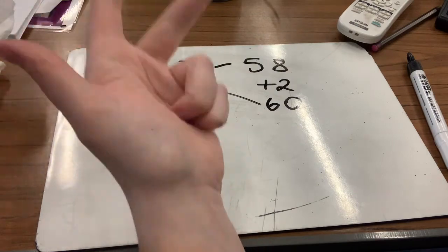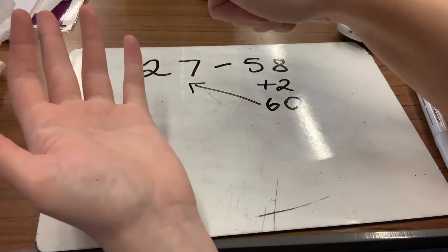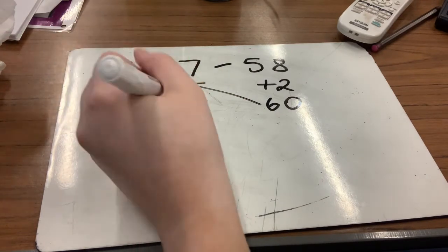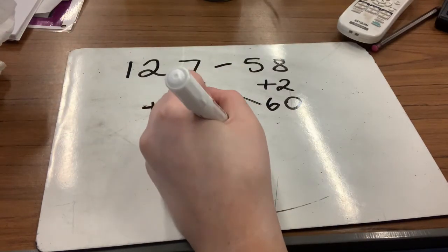70, 80, 90, 100, 110, 120. So that would be six tens and seven units, or 67. So I put my 67 and my two together to make 69.